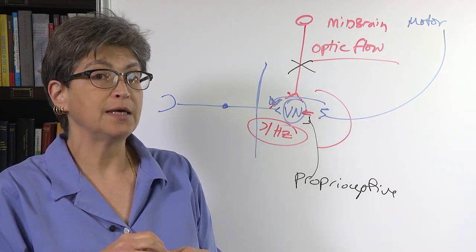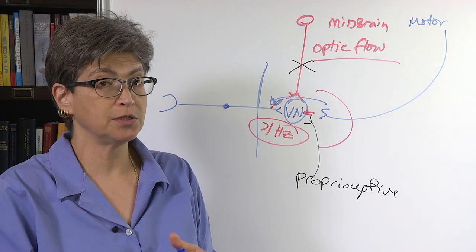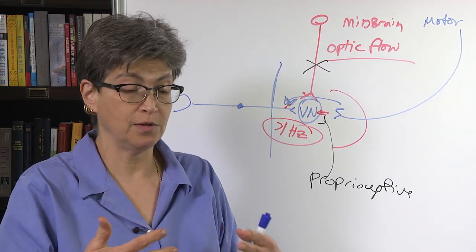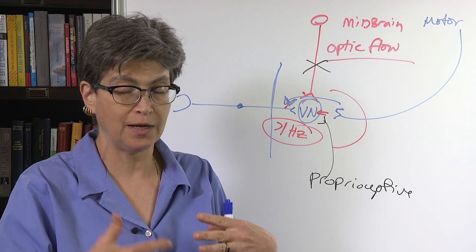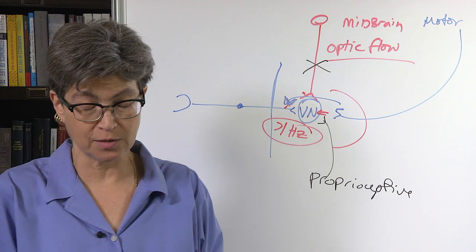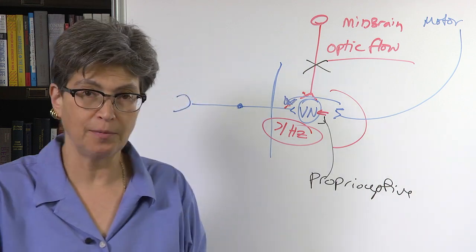And this mismatch, again, takes you into toxin detector land where the sensory mismatch is interpreted as something's wrong in my blood. I better throw up. I must've eaten something bad.